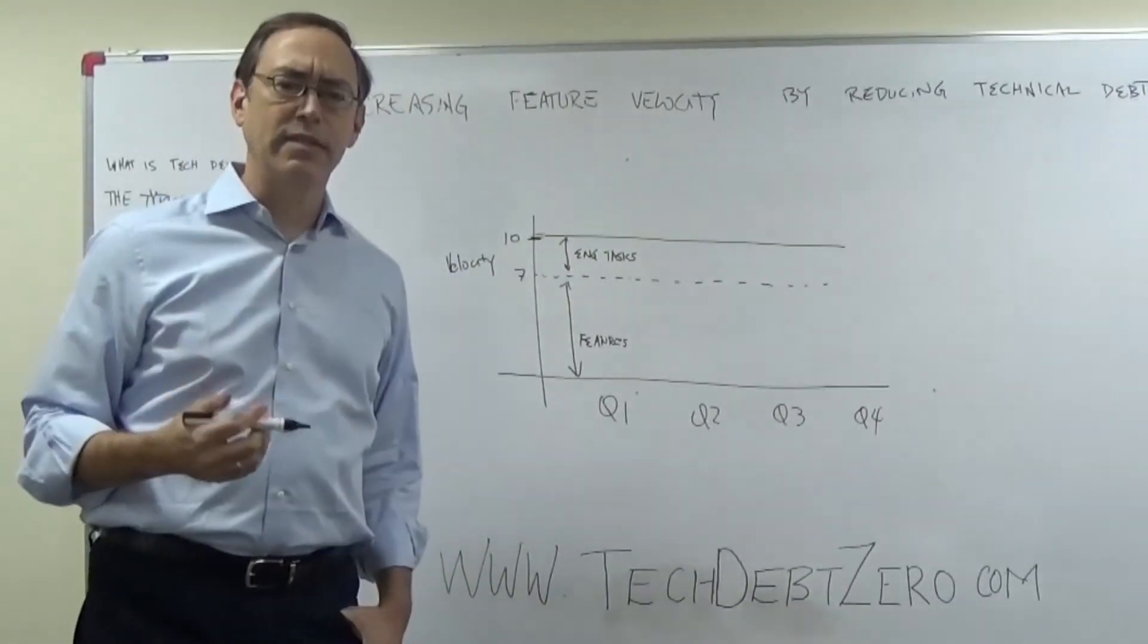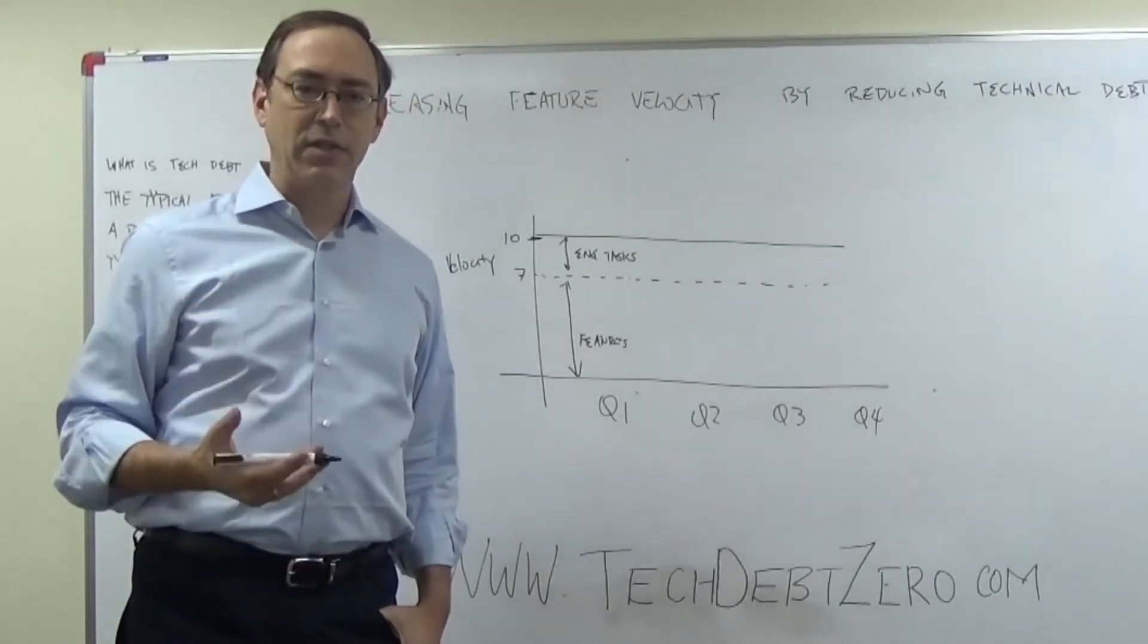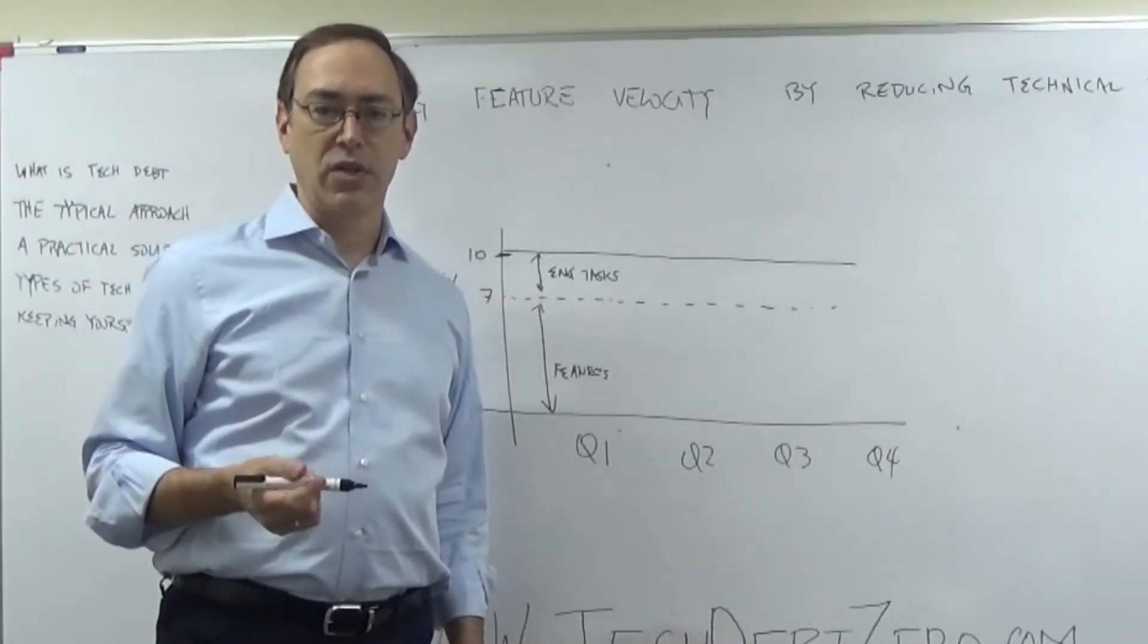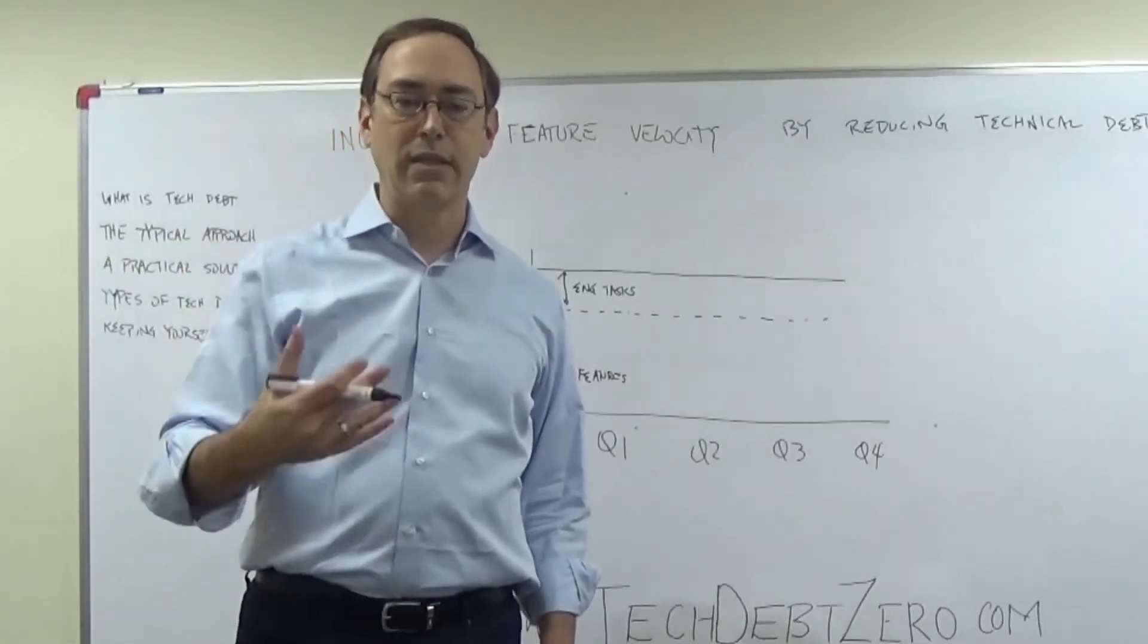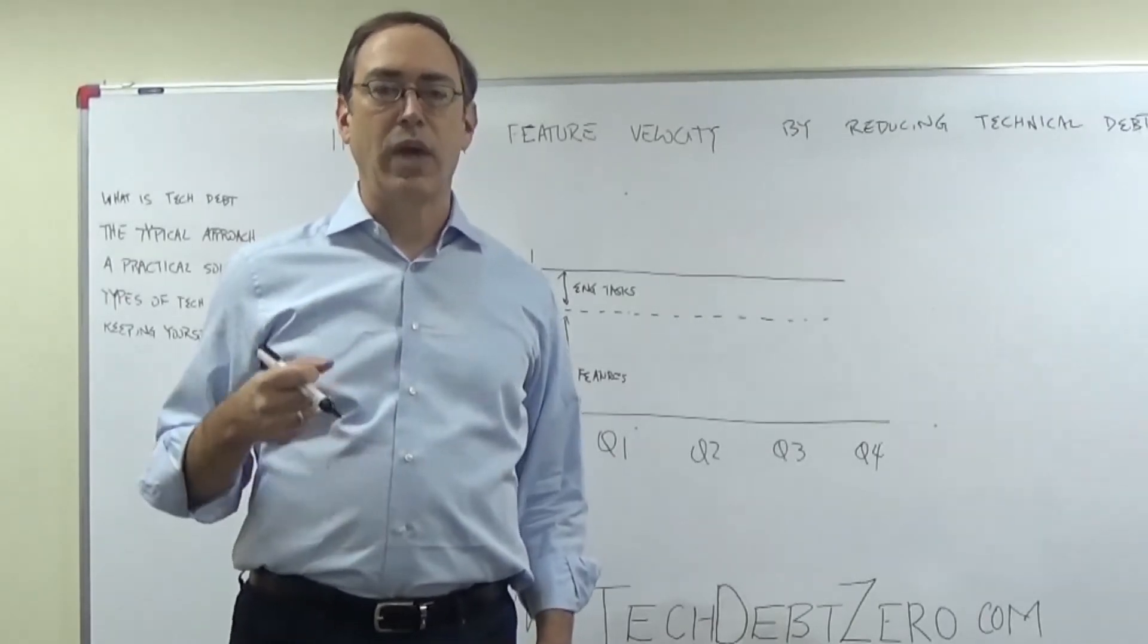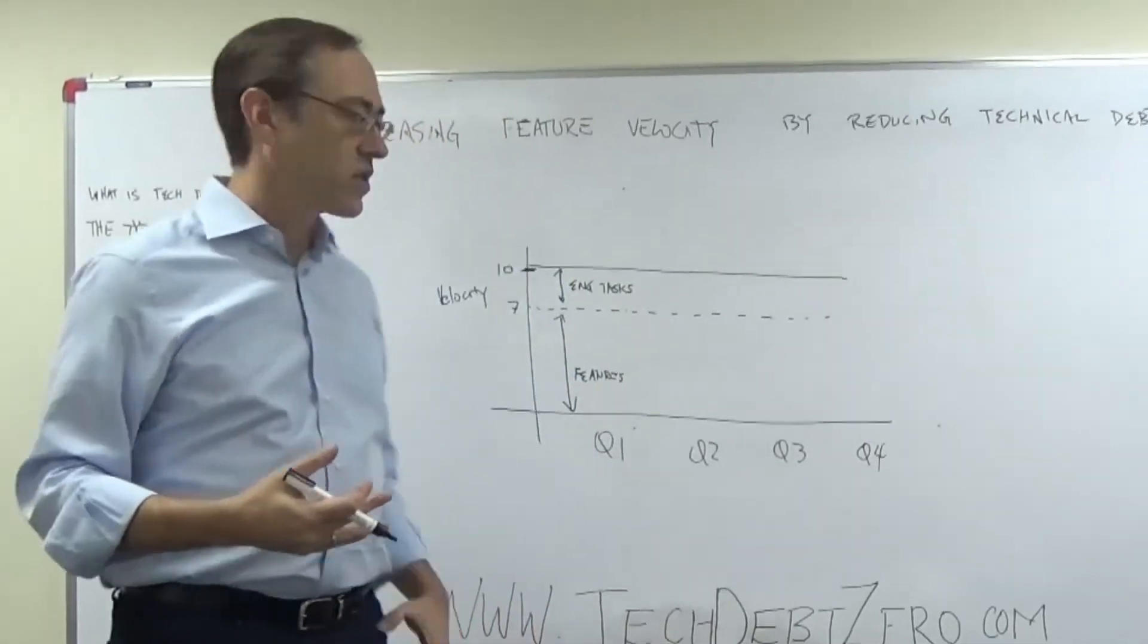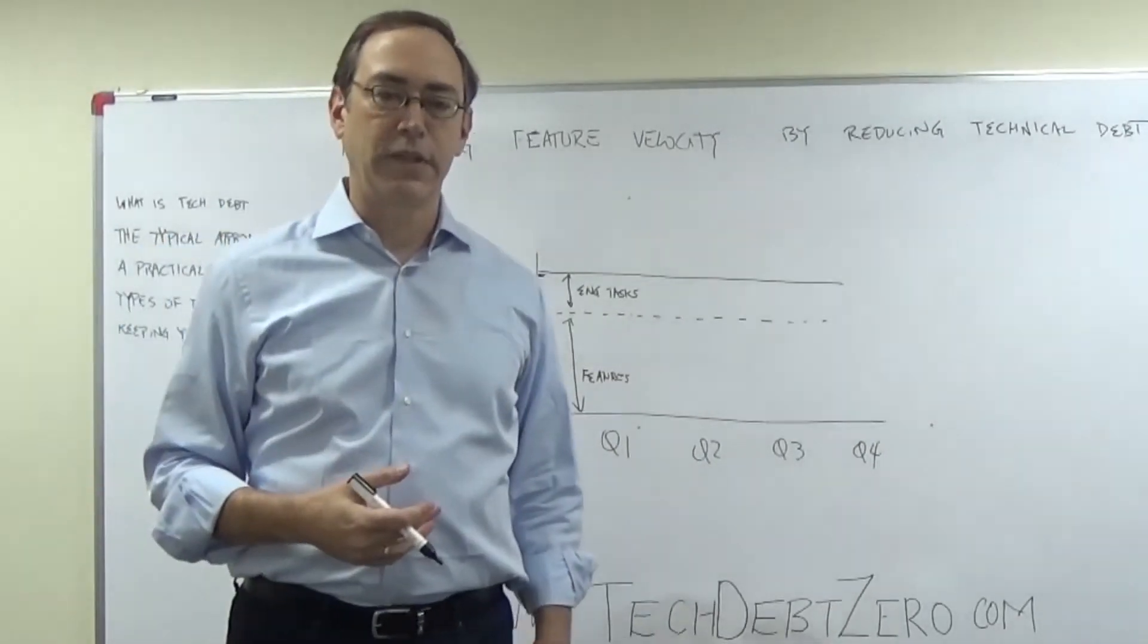Now what happens is that in many companies, the business pressure and other organizational dynamics would cause folks to use more of their capacity to deliver features. There's an urgent customer request. There's a need from the business. You have to make the number for the quarter. And so the pressure would be, we need to do eight features this quarter. We need to do nine features. We need to do ten features. In a situation where your natural capacity is a total of ten, but really you ought to be using seven for feature delivery.